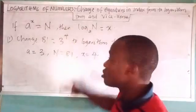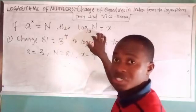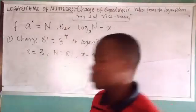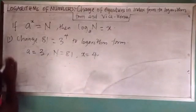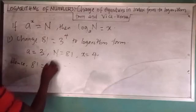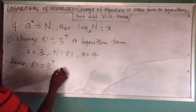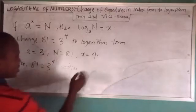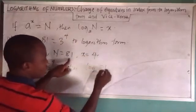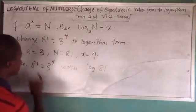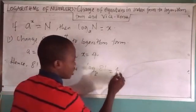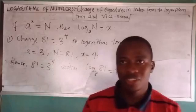So now the only thing you are going to do is just to put all these values into this equation. Then 81 equals 3 to power 4 implies log 81 base 3 equals 4. That is how it is done. You can see, very simple.